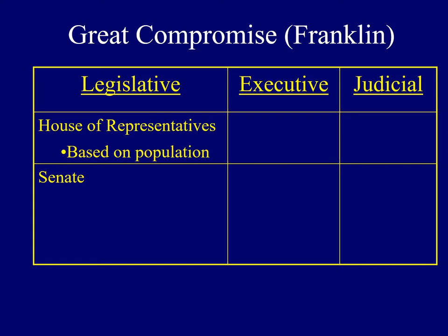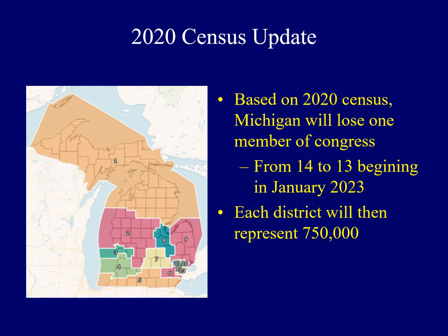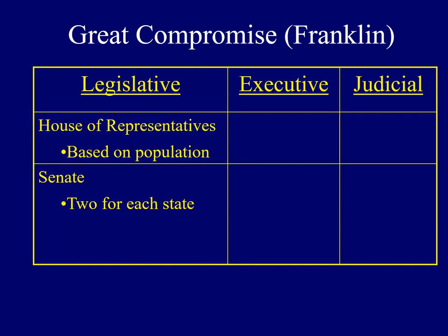The number of representatives for each state was based entirely on population, which made large states happy. We have a census every 10 years, and today each member of Congress represents a district of about 700,000 people. Michigan currently has 14 members of the House of Representatives. Based on the 2020 census, Michigan was growing at a slower pace than other states, so beginning in January 2023, Michigan will lose one member, going from 14 to 13 representatives. Each state is treated equally in the Senate — whether large or small, every state has two senators.